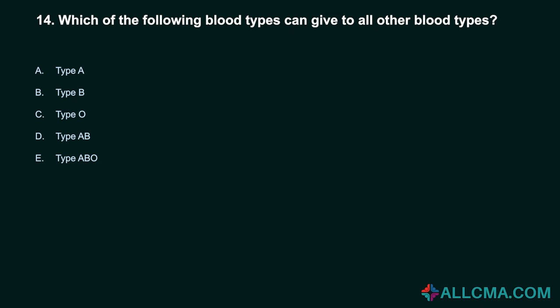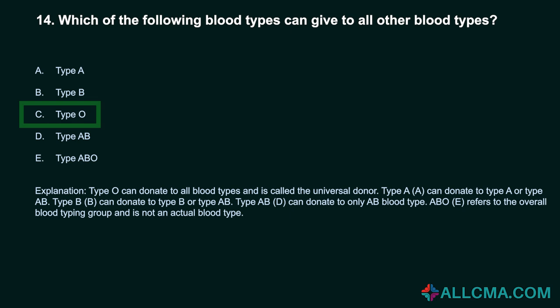Question 14: Which of the following blood types can give to all other blood types? A. Type A. B. Type B. C. Type O. D. Type AB. E. Type ABO. Correct answer: C. Type O. Type O can donate to all blood types and is called the universal donor. Type A can donate to type A or type AB. Type B can donate to type B or type AB. Type AB can donate only to AB blood type. ABO refers to the overall blood typing group and is not an actual blood type.